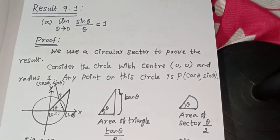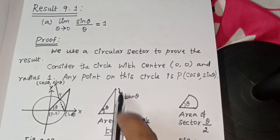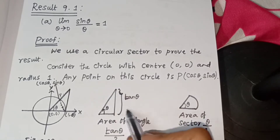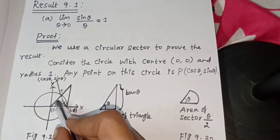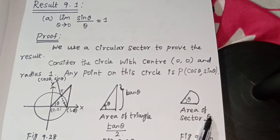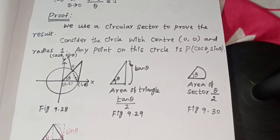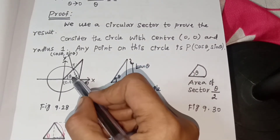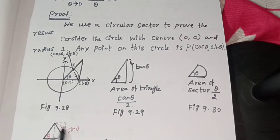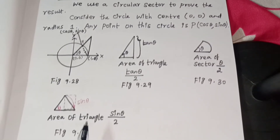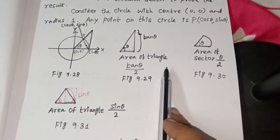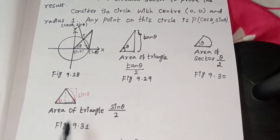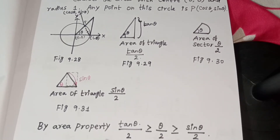Next, area of triangle. Draw the triangle — this side is tan theta, and this angle is theta. So area of triangle equals tan theta divided by 2. Area of sector equals theta divided by 2. Area of the other triangle equals sin theta divided by 2. By the area property: tan theta over 2 is greater than or equal to area of sector theta over 2, which is greater than or equal to sin theta over 2.